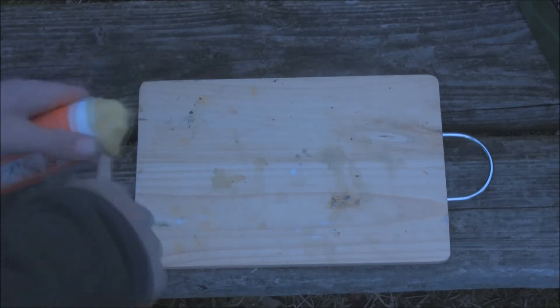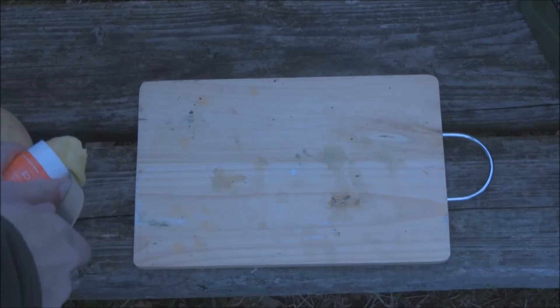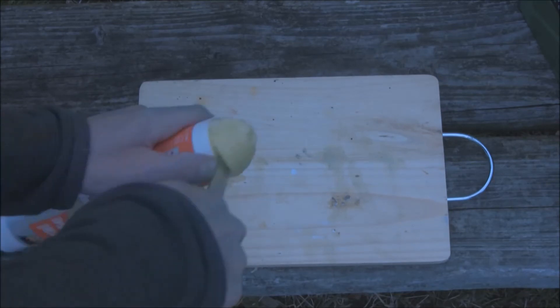Or you can get a corkscrew and screw it in the top and pull it out. And that's probably a better way. But you've just got to be careful that you don't go all the way through to the other side.